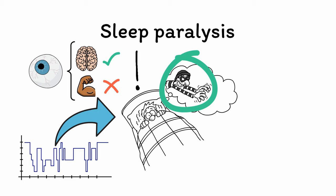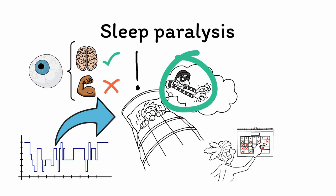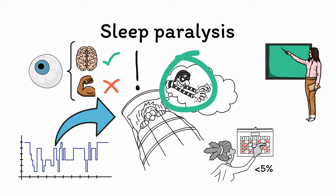Episodes of sleep paralysis can be highly disturbing, especially if they are so frequent or severe that the patient develops anxiety about going to bed. Up to half of all adults have experienced at least one episode of sleep paralysis, although less than 5% experience them on a regular basis. Education on the nature of sleep paralysis and teaching of relaxation techniques can often be treatment enough, although in more severe cases, CBT or serotonin-boosting medications like SSRIs can be used.